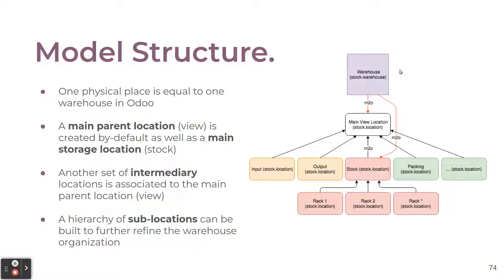Inside Odoo, globally your warehouse has a view location that is just the architectural view to manage the different locations below — there is normally no stock inside this view location, it's not the purpose. Then you have places dedicated for storage. The default configuration is WH/Stock, and then you have sub-locations to put products at different places inside your storage location. It could be shelves or zones, but it's important not to go into too much detail when it's not needed, because you will have to manage the complexity of all these locations.